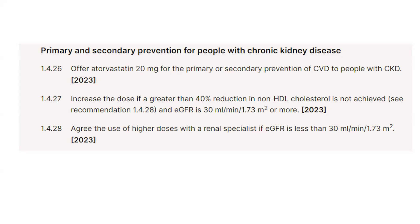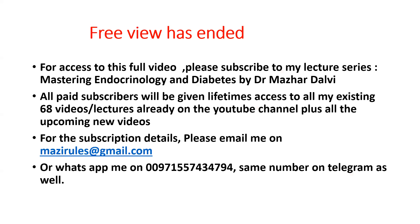For patients with chronic kidney disease, offer atorvastatin 20mg for both primary and secondary prevention of CVD. Increase the dose if greater than 40% reduction in non-HDL cholesterol is not achieved and eGFR is still above 30 ml/min/1.73m². If eGFR drops below 30, agree the use of higher doses with a renal specialist. Non-HDL cholesterol is used as the target marker in CKD patients.